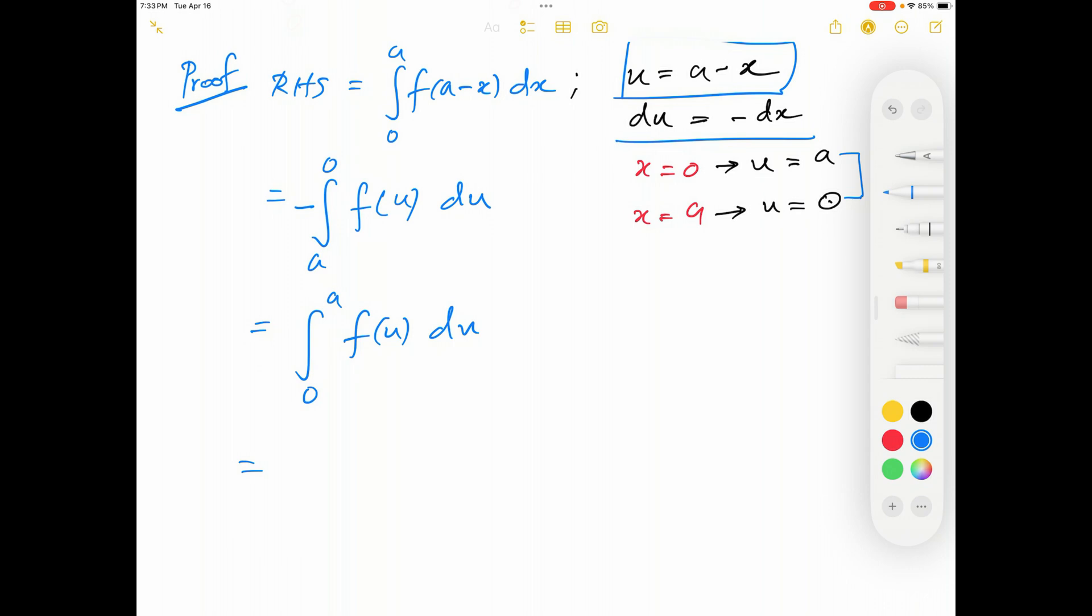We know that the answer for a definite integral is going to be always irrespective of the variable that was used in the function. So 0 to a f of u du will also be equal to 0 to a any other variable, f of x dx, thereby completing the theorem.